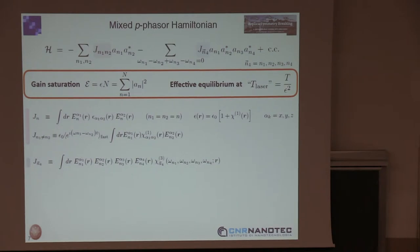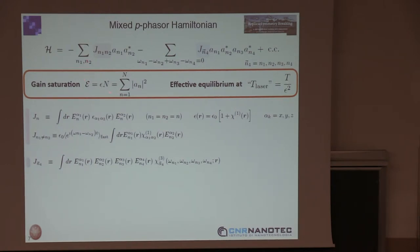That — surprise, surprise — is a 2+4 model where the variables are complex numbers, but because of gain saturation, because the laser does not explode, they satisfy a global constraint: the sum of all the intensities is something fixed, dependent on the external pumping.